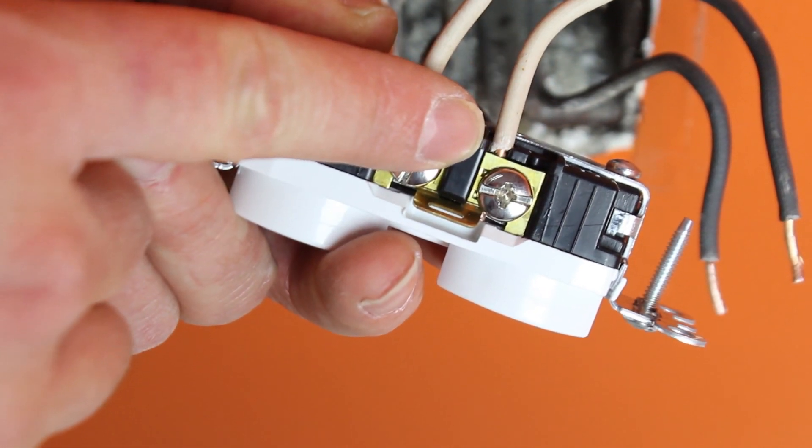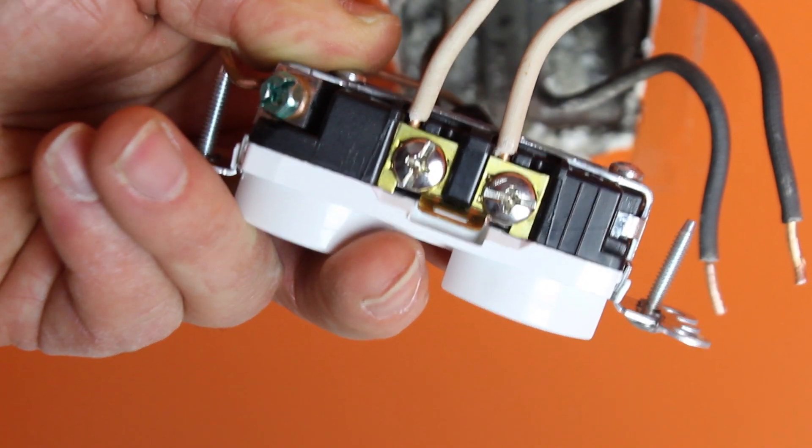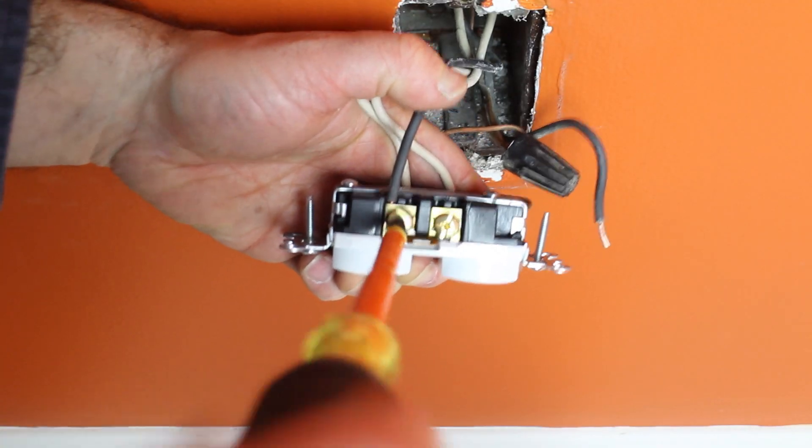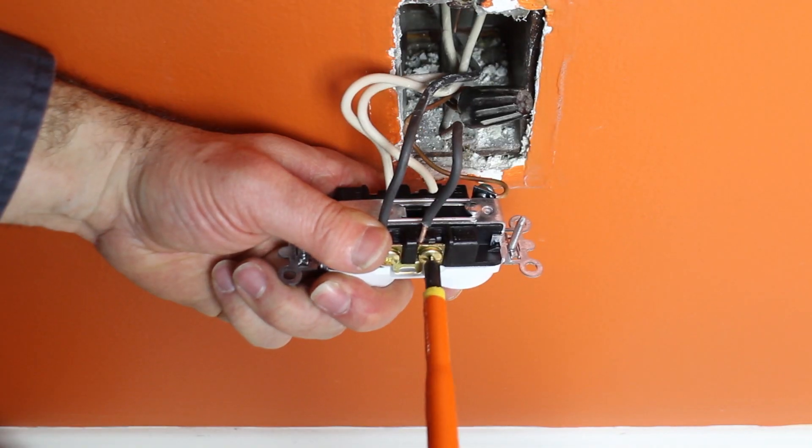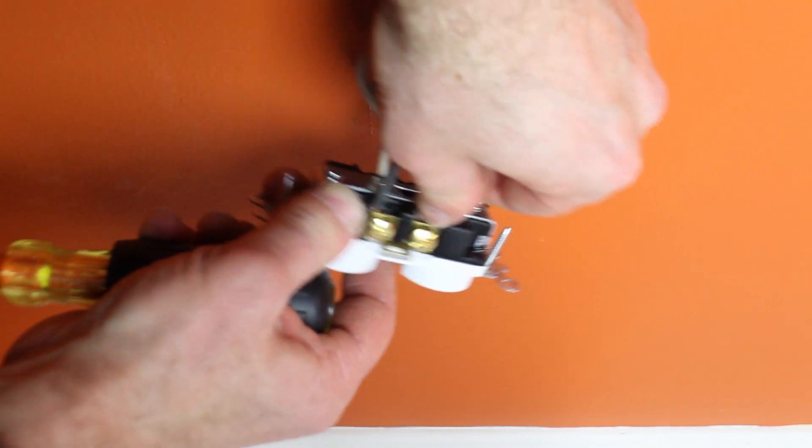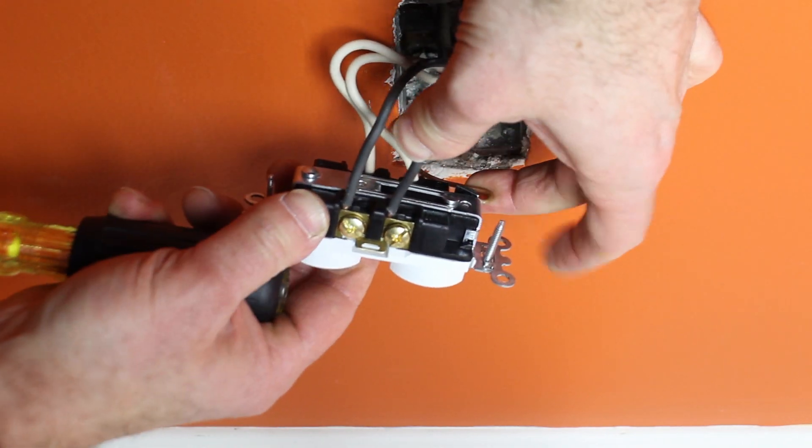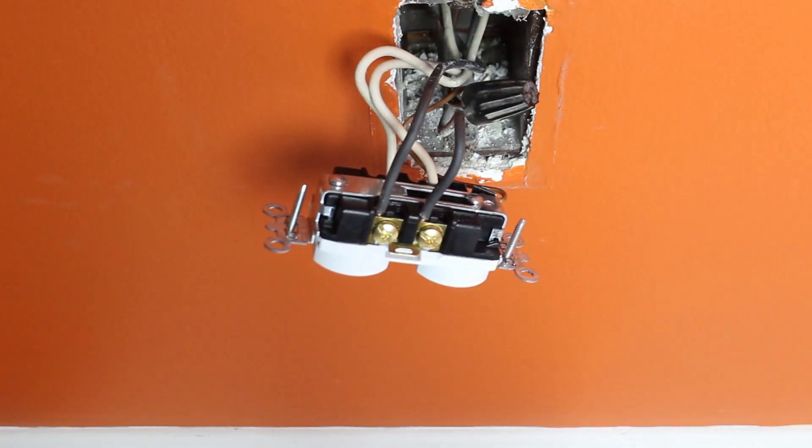I do this exact same thing for the black hot wires. They go with the brass screws. So push them into the back of the outlet and then tighten down the brass screws. Make sure those terminal screws are super, super tight with your screwdriver.